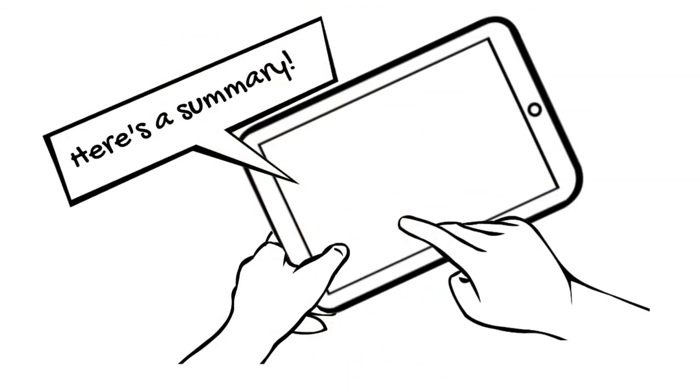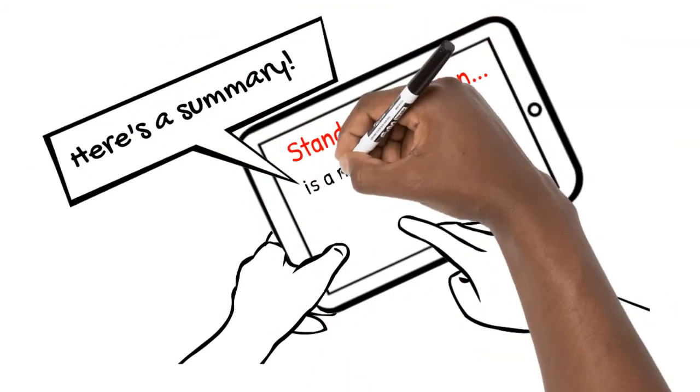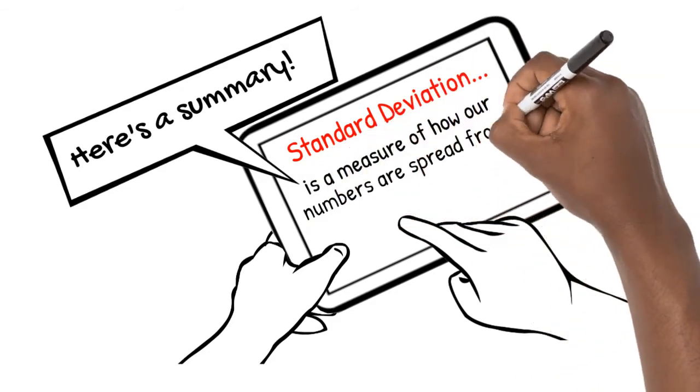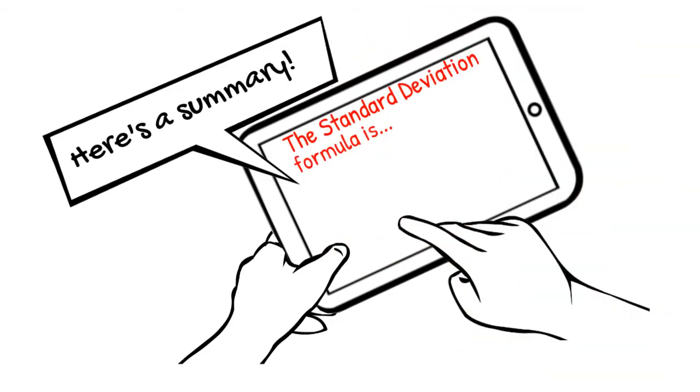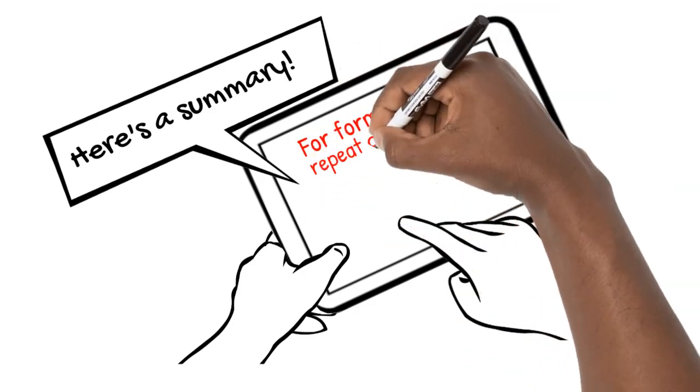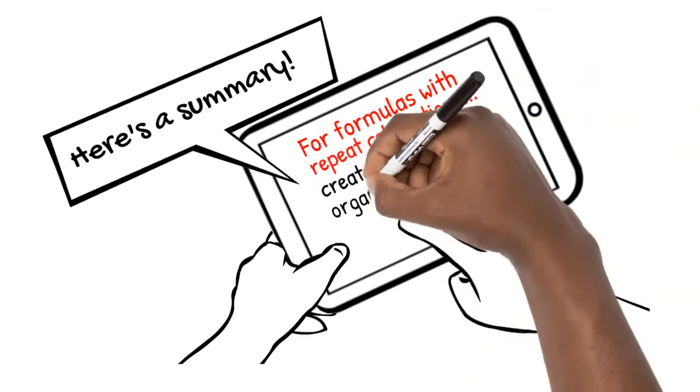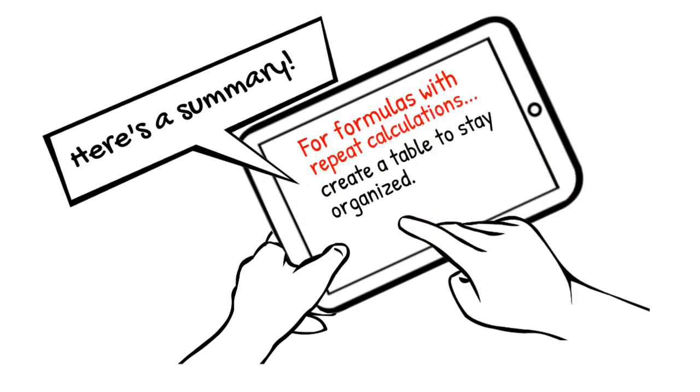Here's what we've learned in this video. Standard deviation is a measure of how far our numbers are spread from the mean. The standard deviation formula is S equals the square root of x minus the average of x squared over n minus 1. For formulas with repeat calculations, create a table to stay organized.